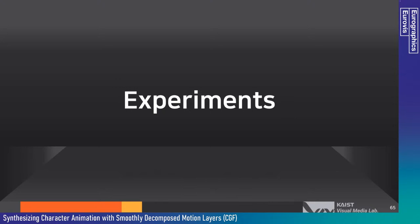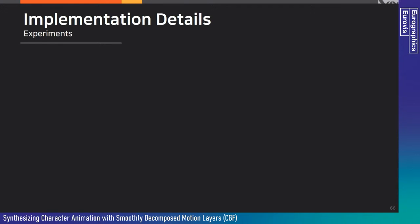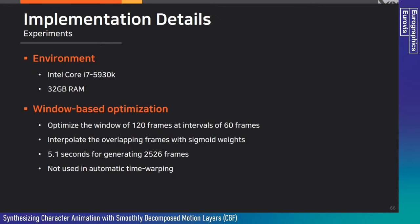We now show how these layers can be used in various synthesis scenarios. All experiments were on a desktop with a single thread, Intel Core i7 and 32 GB RAM. Since the system uses LGS, computation grows exponentially with number of data points. As a remedy, we use window-based optimization, repeatedly optimizing windows of 120 frames at intervals of 60 frames, with overlapping frames interpolated using sigmoid weights. Our longest input motion was about 2,500 frames and took about 5.1 seconds to generate new motion.